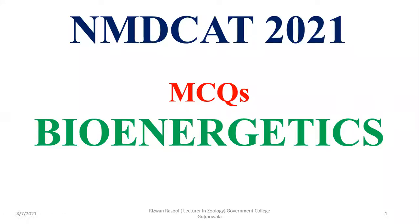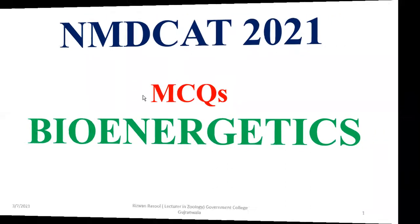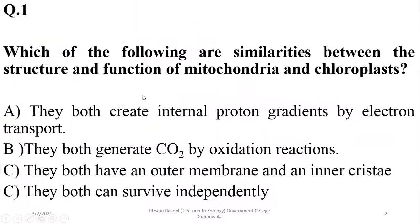Bismillahirrahmanirrahim. In this video we are going to have some discussion about MCQs regarding bioenergetics with reference to preparation of NMD CAT 2021 paper. Question number one: which of the following are similarities between the structure and function of mitochondria and chloroplast? They have internal proton gradients by electron transport chain.